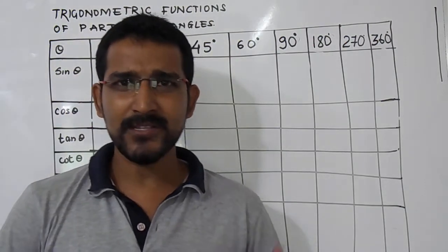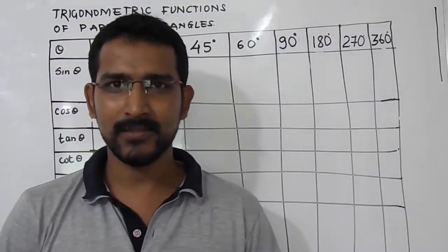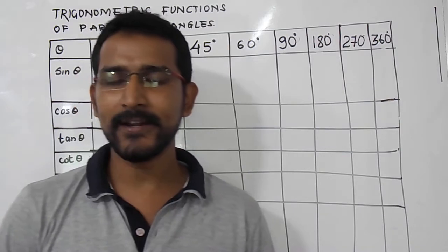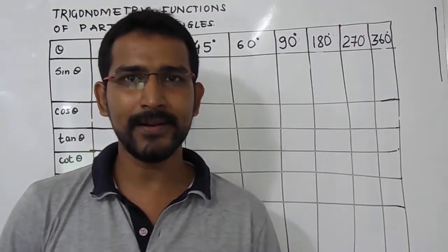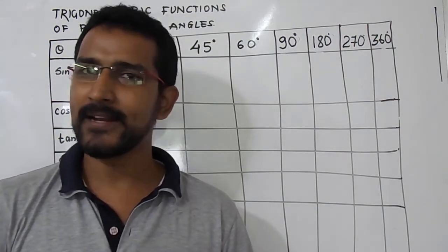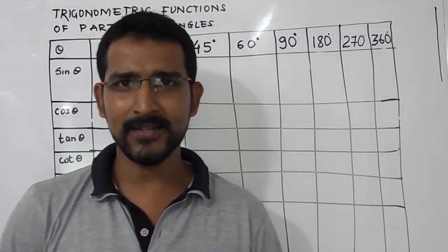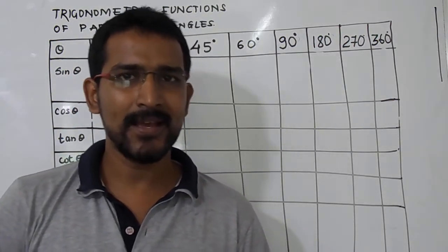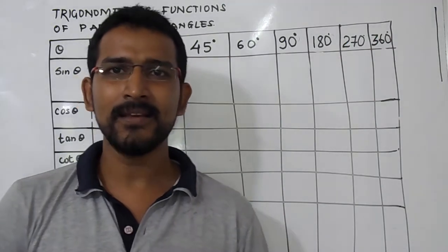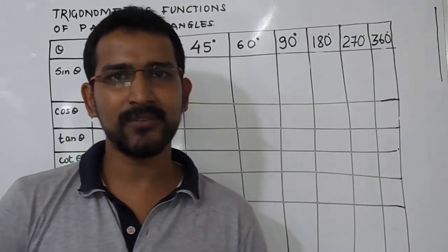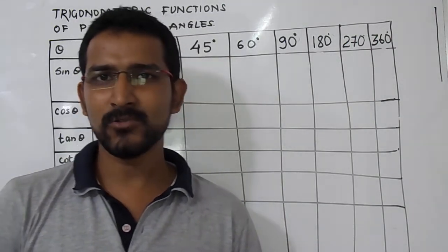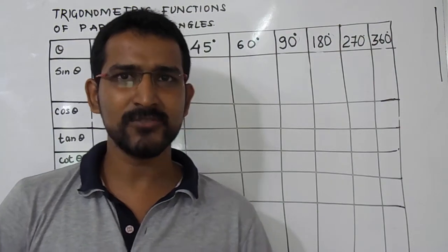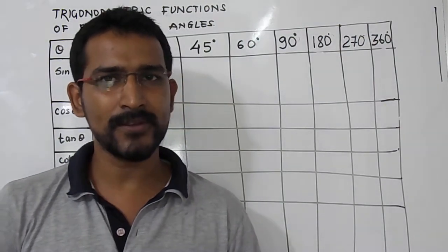First we will see up to 90 degrees. The standard angles are 0°, 30°, 45°, 60°, and 90°. That is useful for school students. And then we will see the other quadrantal angles — that is 180°, 270°, and 360° — which is useful for college students.